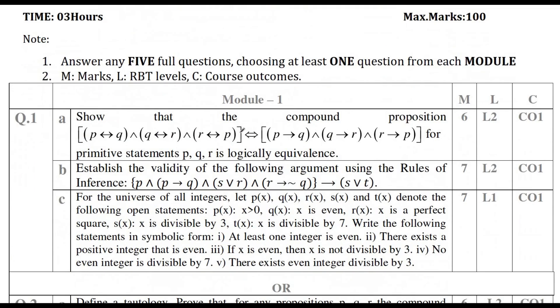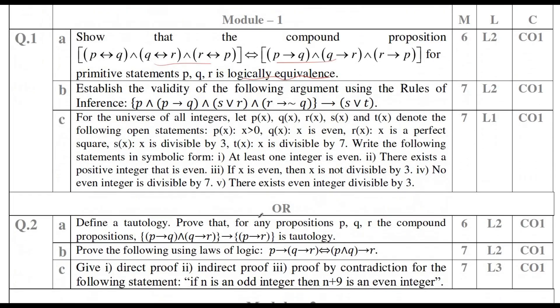Coming to Module 1, which covers fundamentals of logic. If you know how to construct the truth table, they will provide a compound proposition. You need to construct the truth table and prove logical equivalence by showing both left-hand side and right-hand side are one and the same, proving it is a tautology or contradiction. You can also have the choice here where they ask you to define tautology and prove that the given truth table is a tautology.